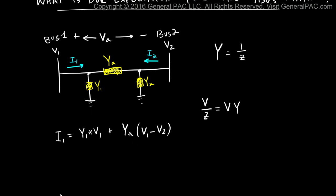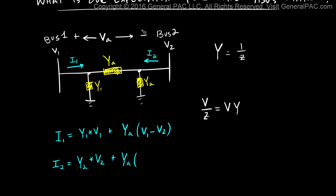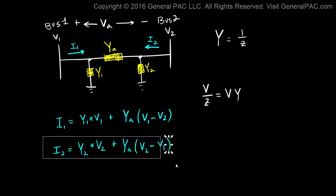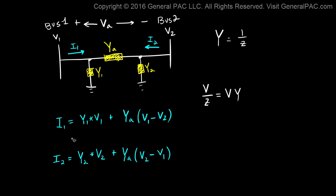Similarly, for current I2: I2 equals the current through shunt admittance Y2 times V2, plus the current through YA using the voltage drop from bus 2 to bus 1. The voltage drop from bus 2 to bus 1 is simply V2 minus V1. So I2 equals Y2·V2 plus YA·(V2 minus V1). Now let's write out these equations in full expanded form and then express them in matrix form.